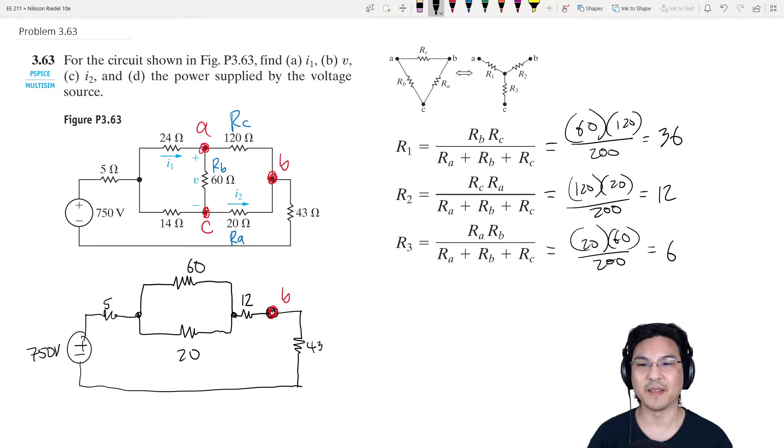And then if you look at it, you could combine these in parallel. So what is 60 and 20 in parallel? 1 over 20 plus 1 over 60, and then take the reciprocal. So 1 over 20 is like 3 over 60, so that's 4 over 60. Take the reciprocal is 15.